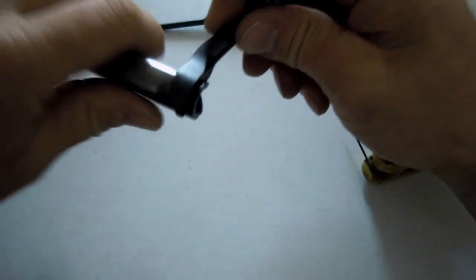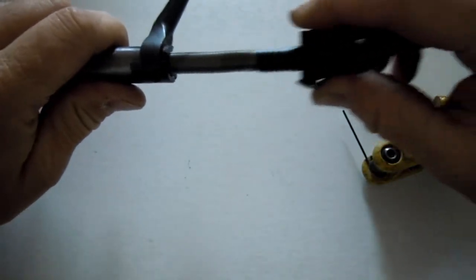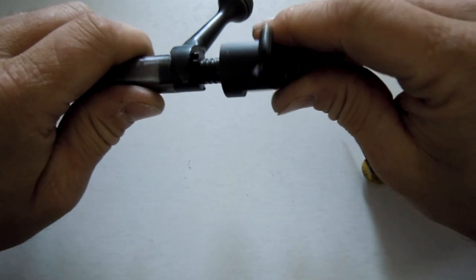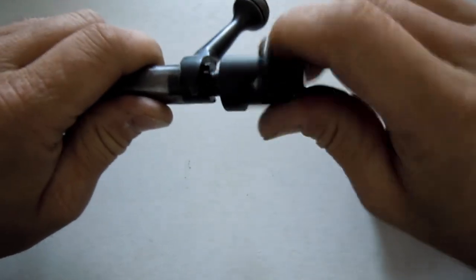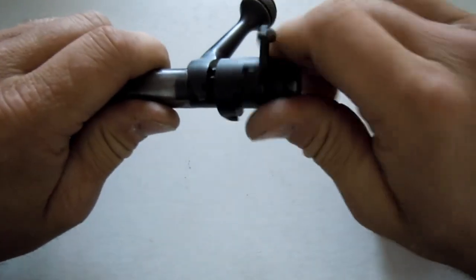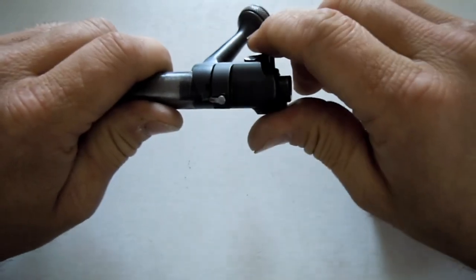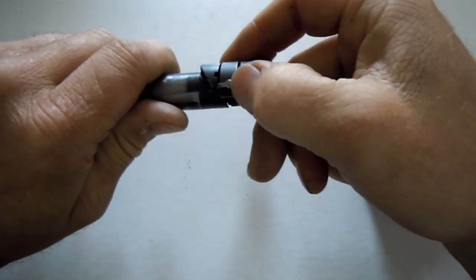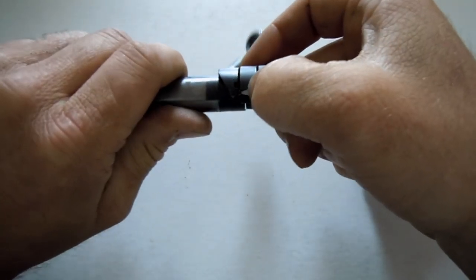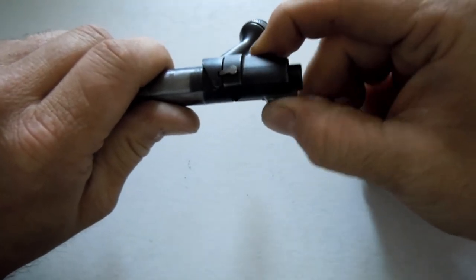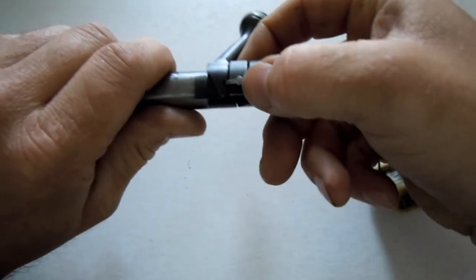Now put it back together, it's pretty simple. Come around, all you have to do is push this down, twist, lock it back in place for that detent. That's it.